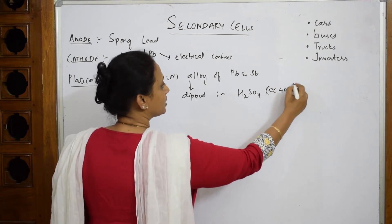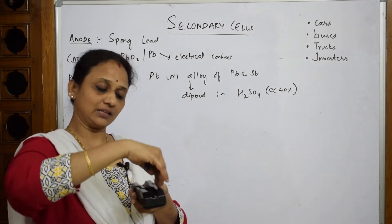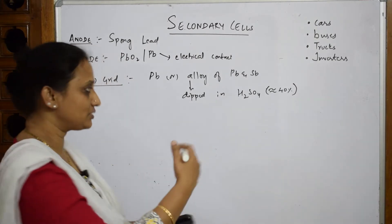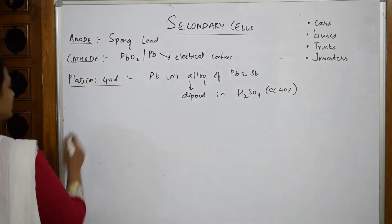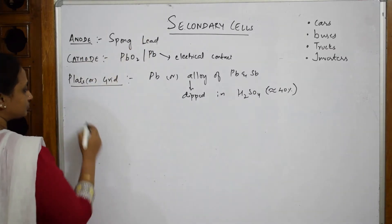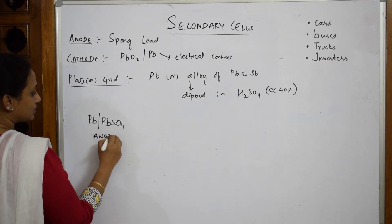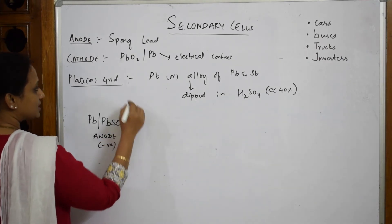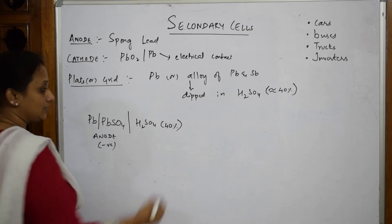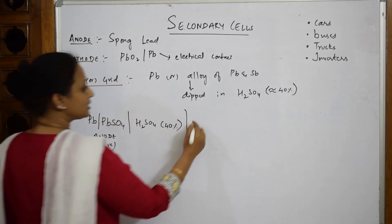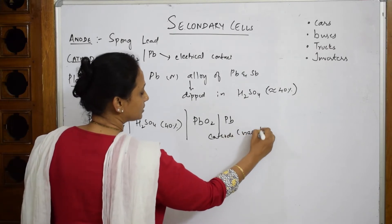Now let us write the cell reaction. At the anode you have spongy lead (Pb) which will form PbSO₄ — this is the negative electrode. The electrolyte is approximately 40% sulfuric acid. At the cathode you have PbO₂ on a Pb base — the Pb base is only for maintaining electrical contact.